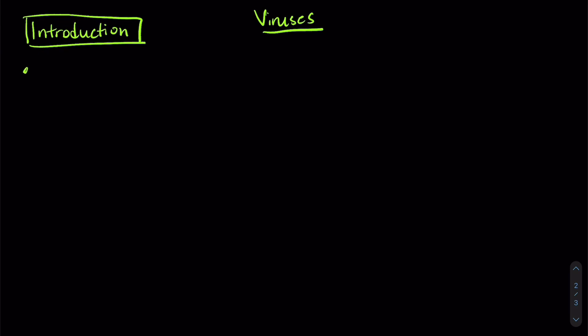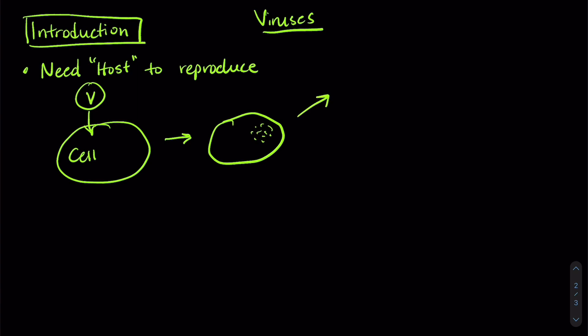So viruses are really unique because they need host cells to reproduce. They can't reproduce on their own. Basically we have a virus and a cell. The virus gets into the cell and when it's in the cell it kind of breaks apart and its DNA or RNA, depending on what kind of virus it is, uses the cell's machinery and its energy to create more little virus babies. In the end the virus actually uses the host cell to make more of themselves.